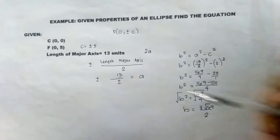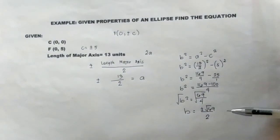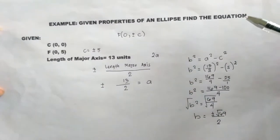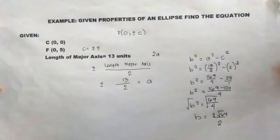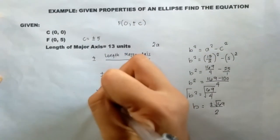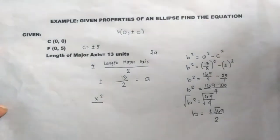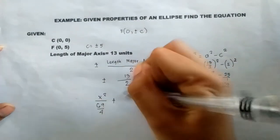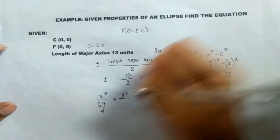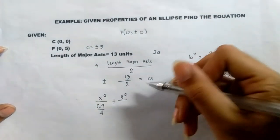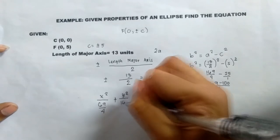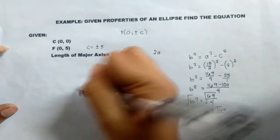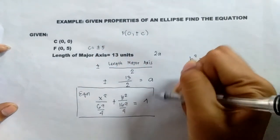Now that we have the length of our a and our b, we can now formulate our equation. Remember that this is an example of case 2, so our a would be under our y. So we have x² over our b², which is 69/4, plus y² over a², which is 169/4, equals 1. And that is your equation for this problem.